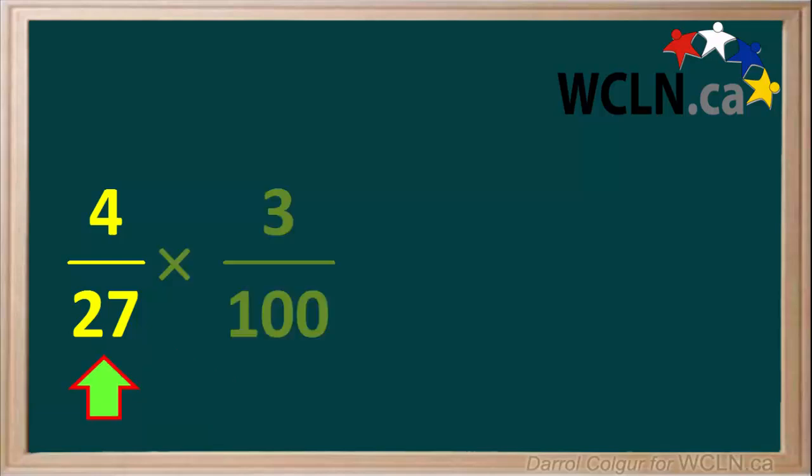The fraction 4 27ths is already in its simplest form. And so is the fraction 3 100ths. Now let's check the diagonal numbers and see if we can do some cancelling and simplifying.